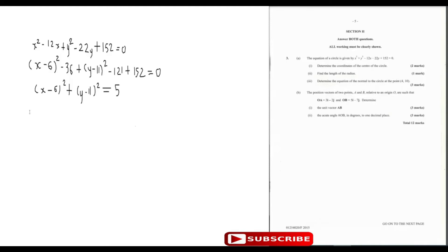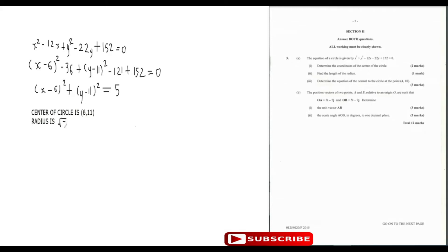Now we can tell them that the center of the circle is (6, 11). Now that we have the center, we can tell them the radius is the square root of 5. That's the radius — the square root of 5. Nice and easy.